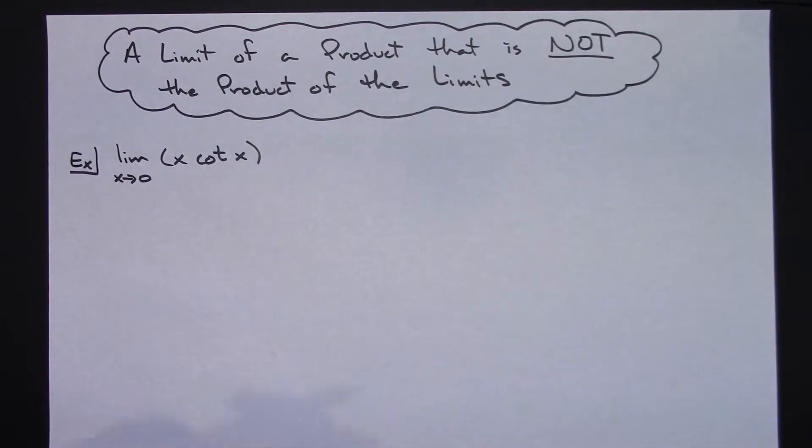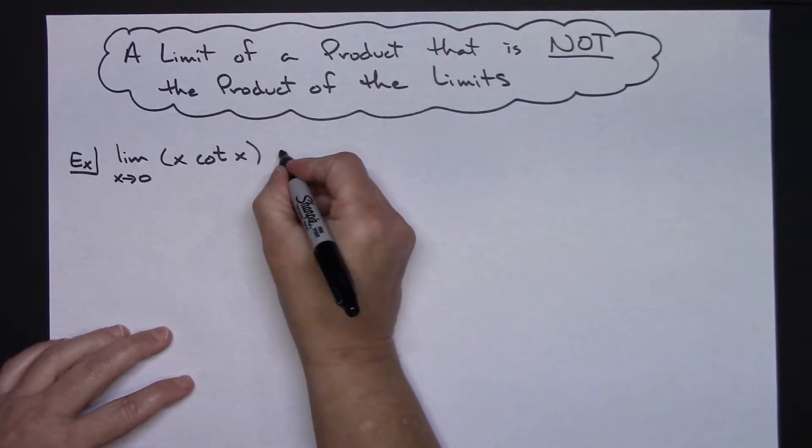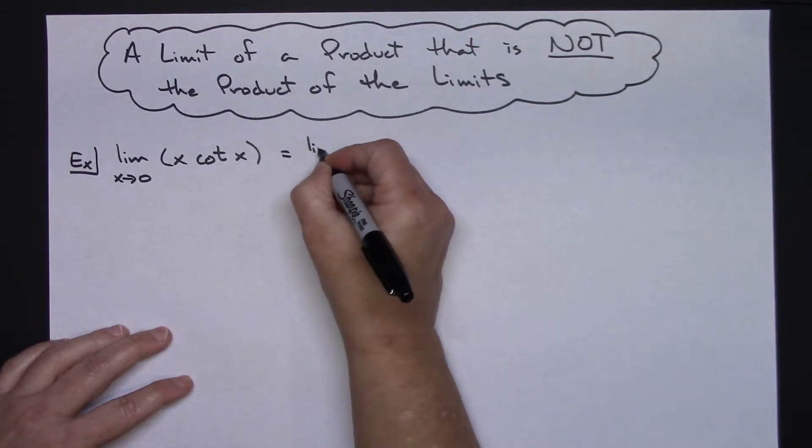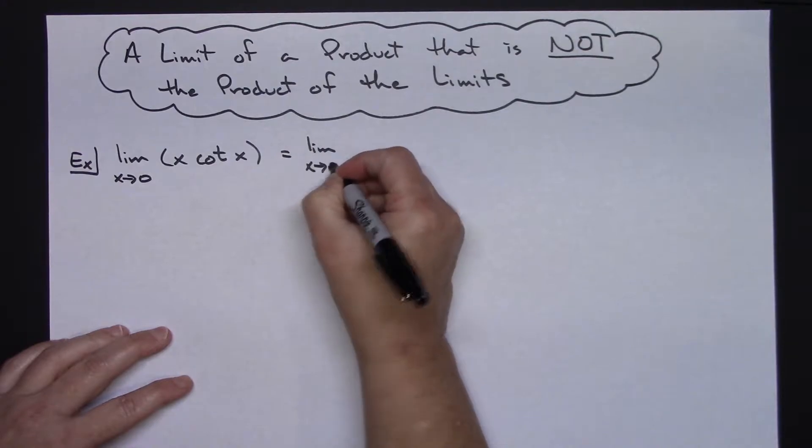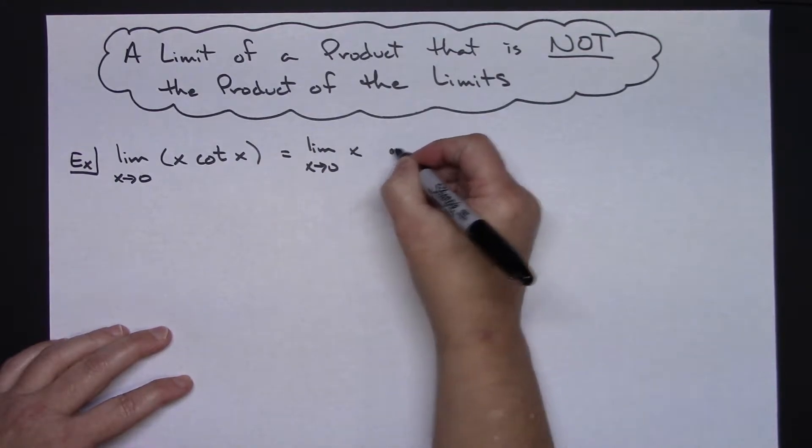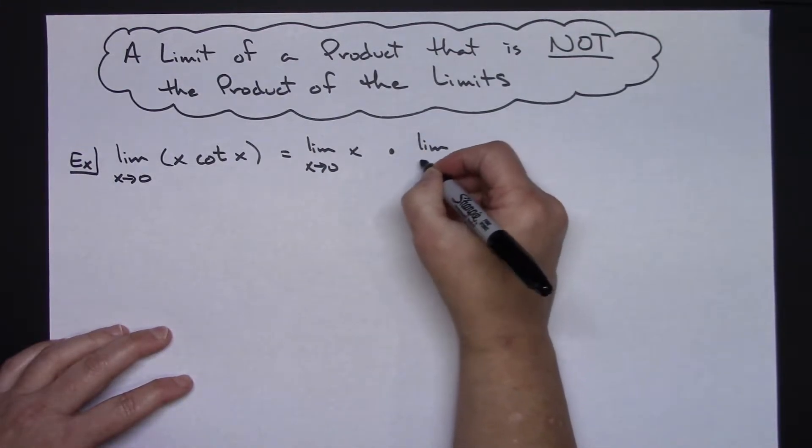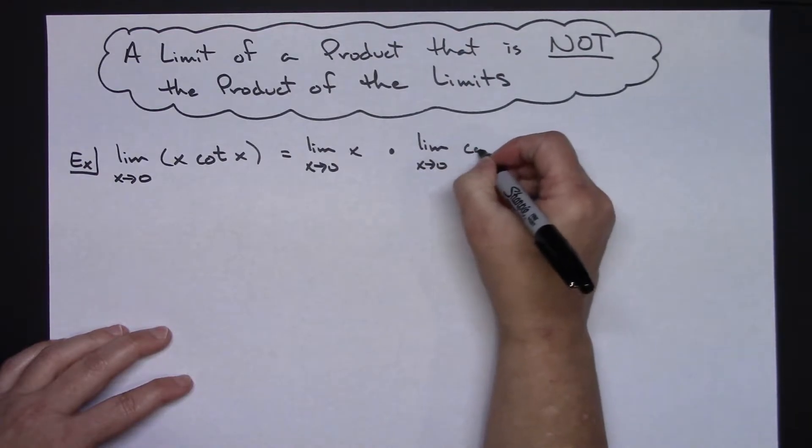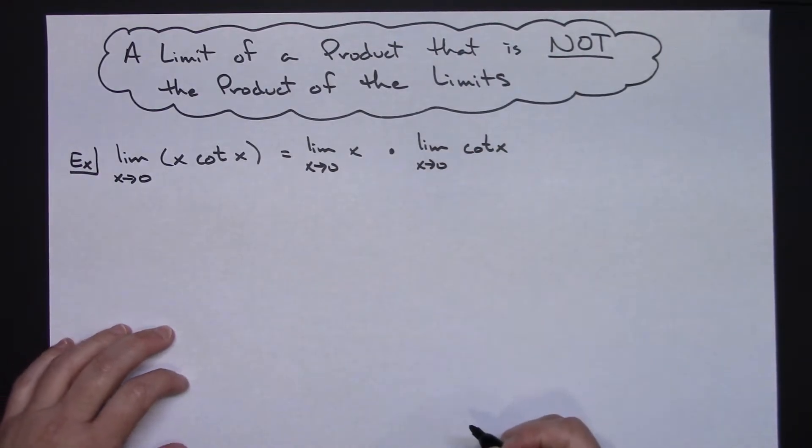So when you first look at this your first inkling might be to say, okay I can do the limit as x approaches 0 of x times the limit as x approaches 0 of cotangent x.